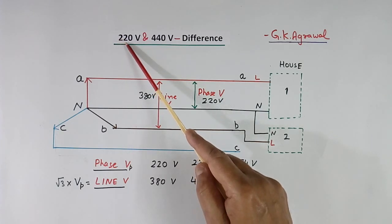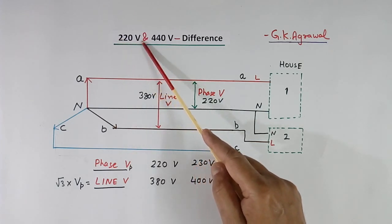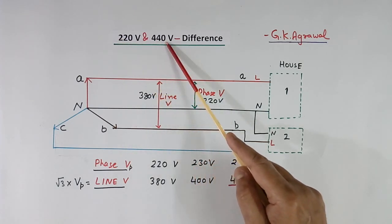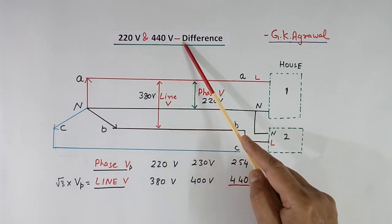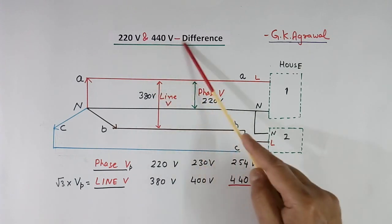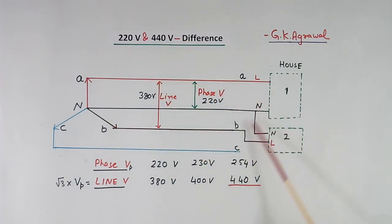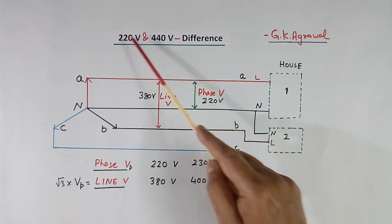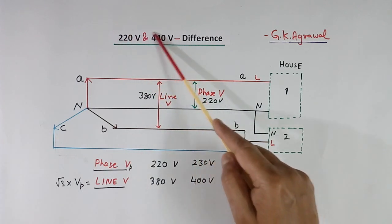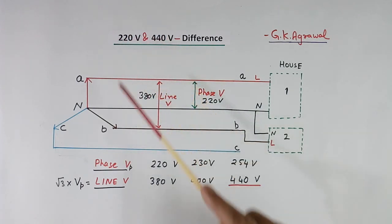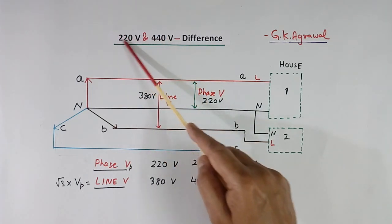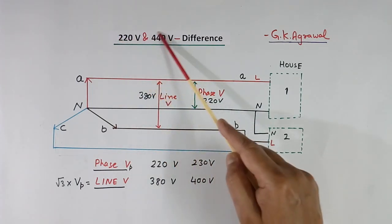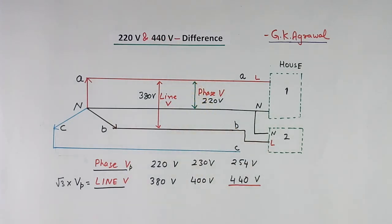Today I will explain what is the difference between 220V and 440V. This is related to AC supply given to houses. This voltage will depend upon different countries. In India, it is 220V and 440V.